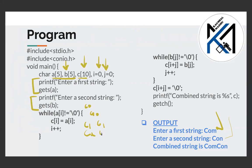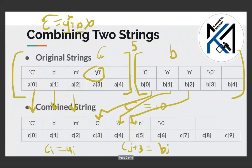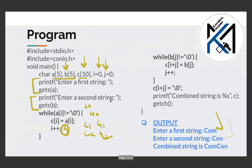Now, the value of a[2] copies to c[2]. Then i increments to 3. At a[3], the value equals null, because null is at the third position of A. Then you have to put a loop — if you have the value of i, it will return.